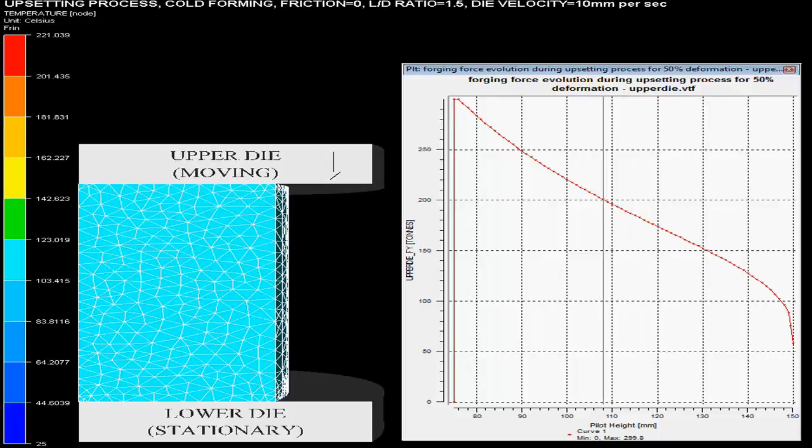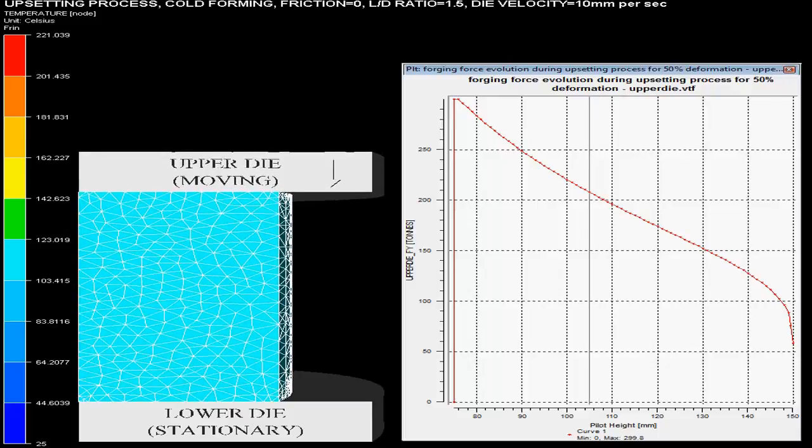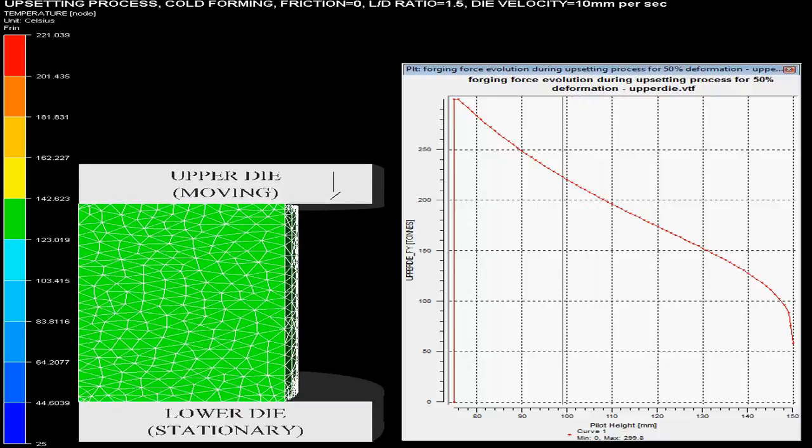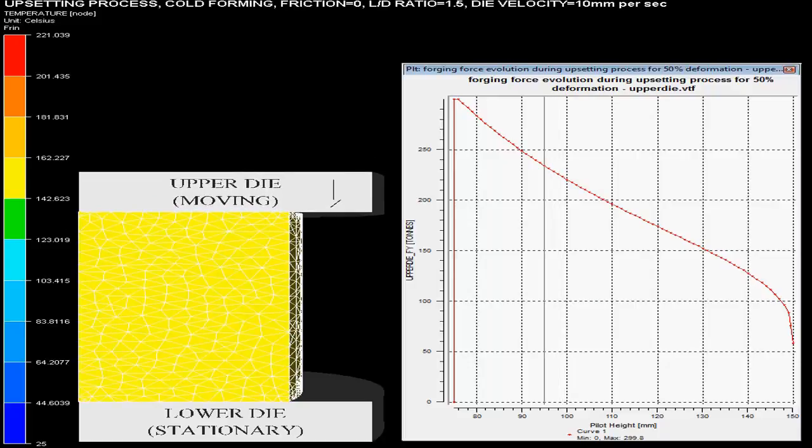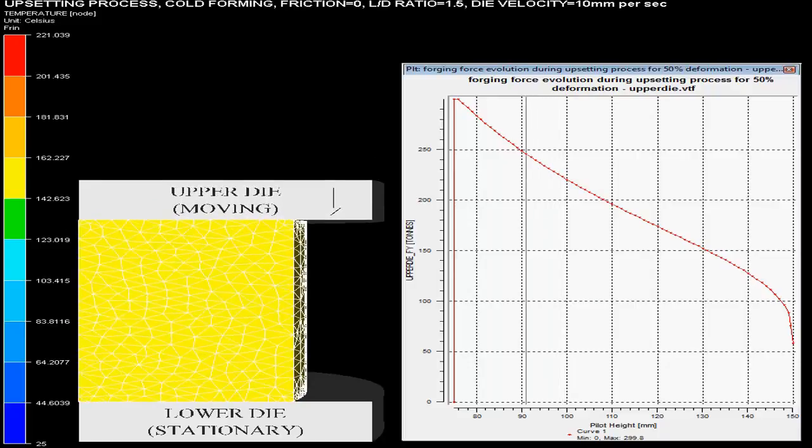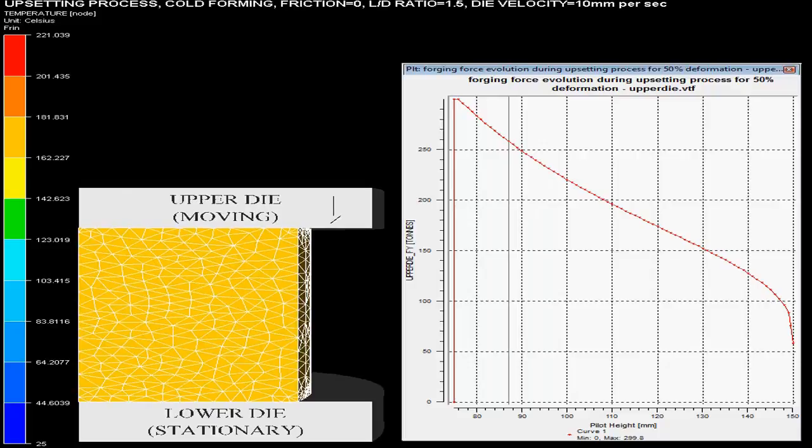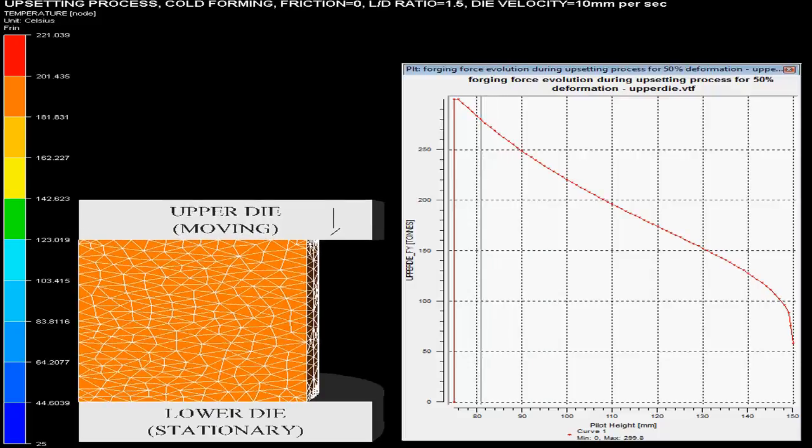In this finite element simulation video, one can see an upsetting process simulation for titanium. The forging process requires two dies: one bottom die and one upper die.